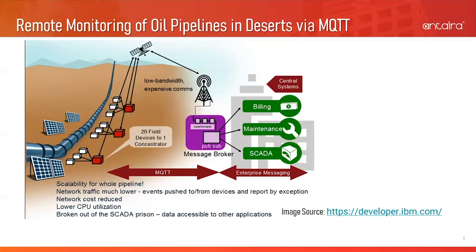MQTT stands for MQ Telemetry Transport, which is an application-layer protocol that runs on top of TCP. MQTT was designed for connections between devices with limited resources and was created back in 1999. MQTT is based on a publish-subscribe framework, which is event-driven and enables messages to be pushed by MQTT clients. An event can be considered as any significant change in state or sensor outputs. During that time, there were 20 devices connected to one concentrator, which represented the MQTT client.